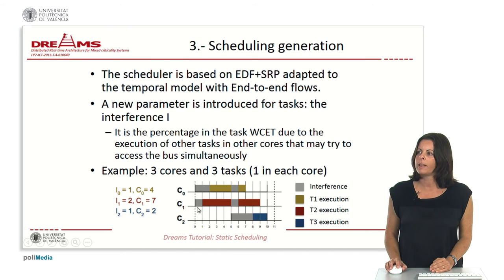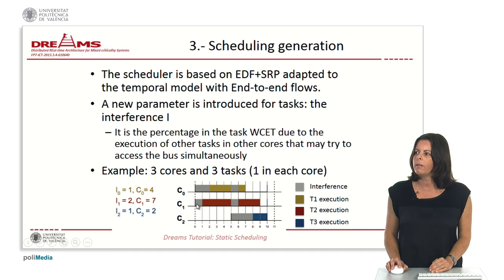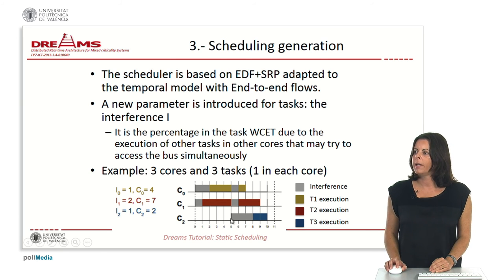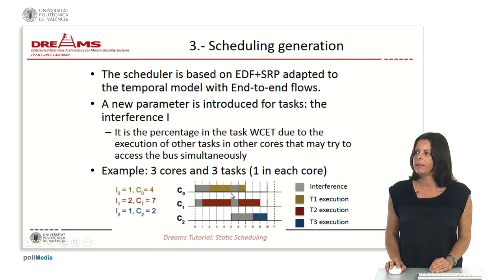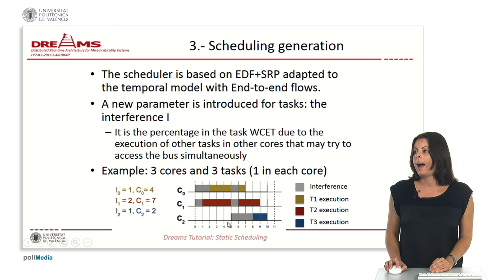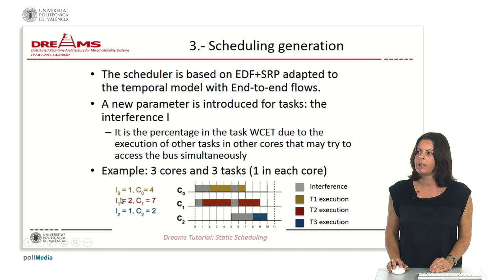The same happens for the next task in core 1: it has 7 units of computation time, and the green squares represent the interference caused by task 0. At time 5, task 2 begins its execution, and this causes 1 unit of interference in the remaining tasks, depicted as green squares for tasks 0 and 1. Task 2 itself suffers 3 units of interference: 2 units from task 1 and 1 unit from task 0.